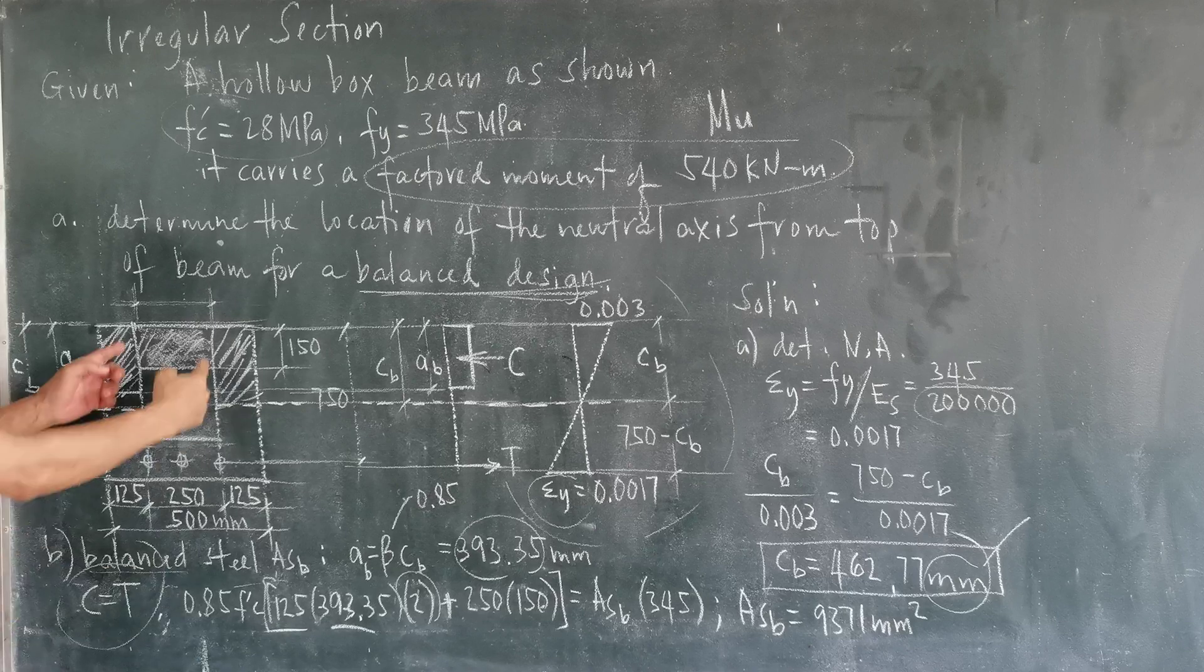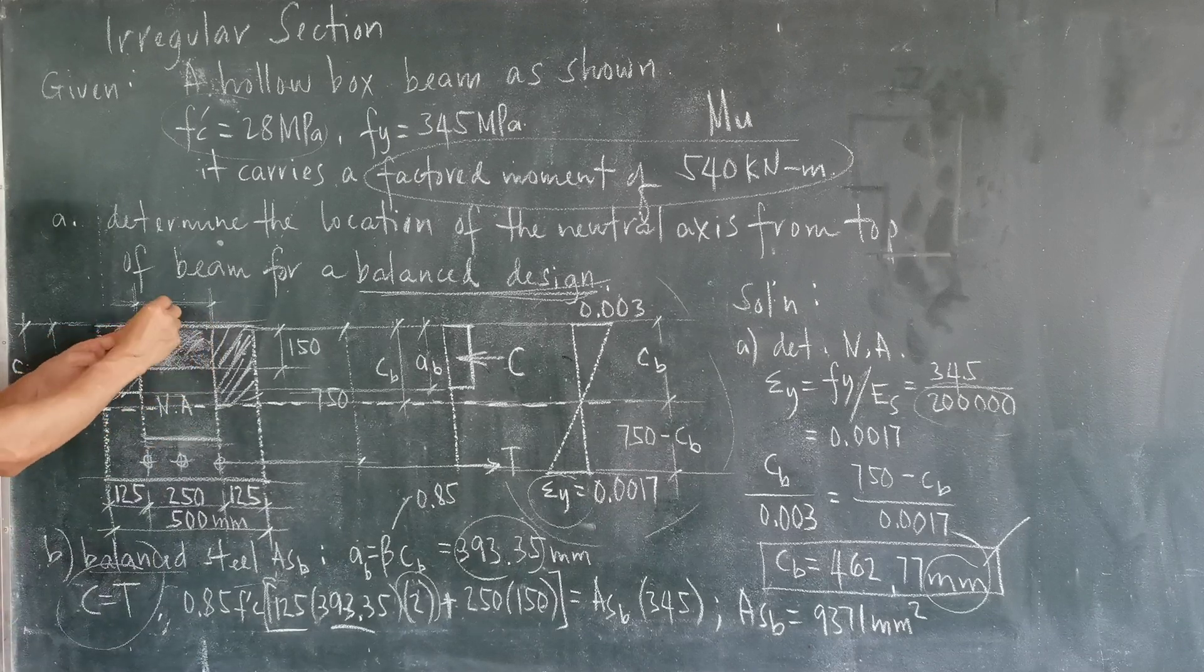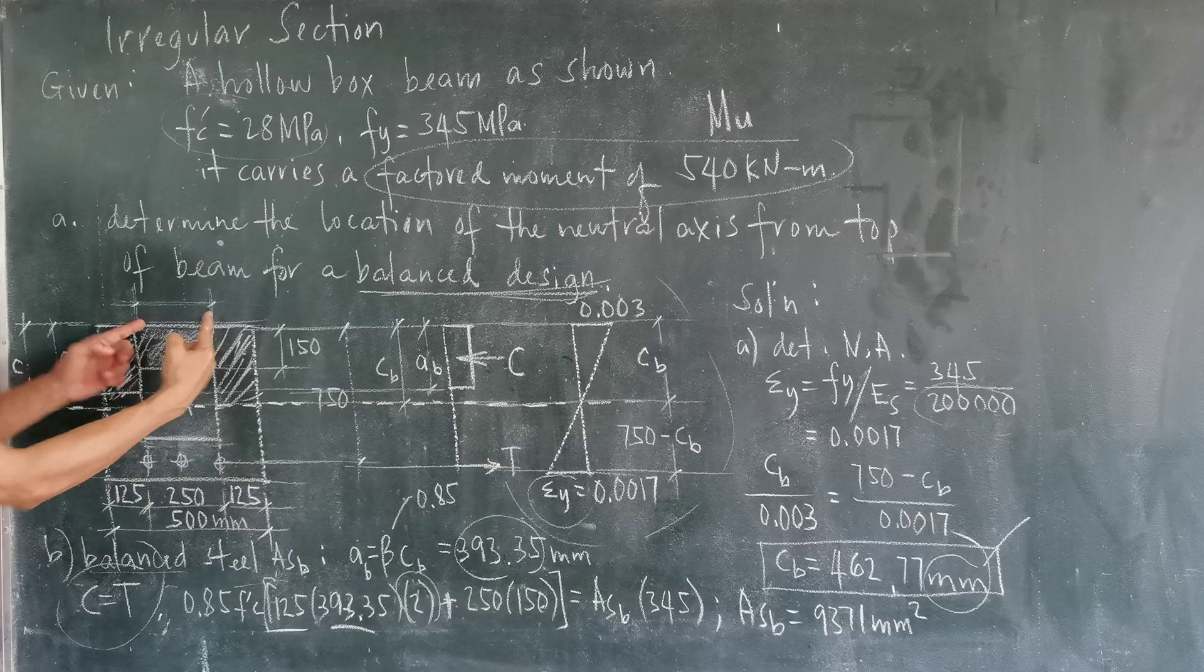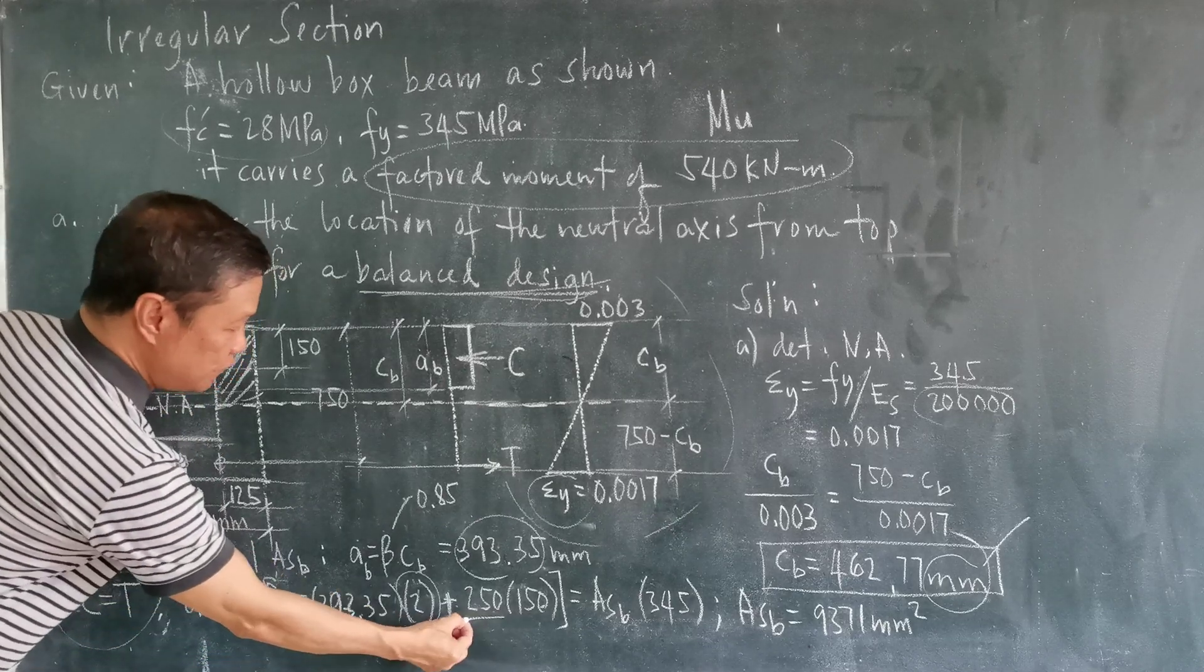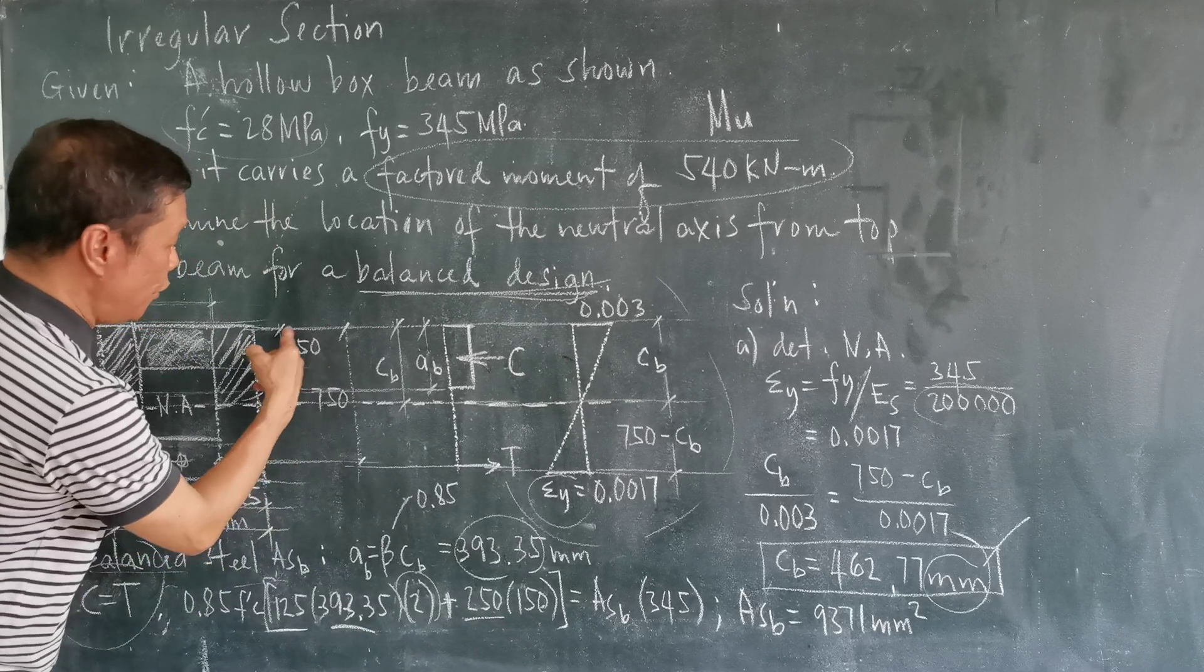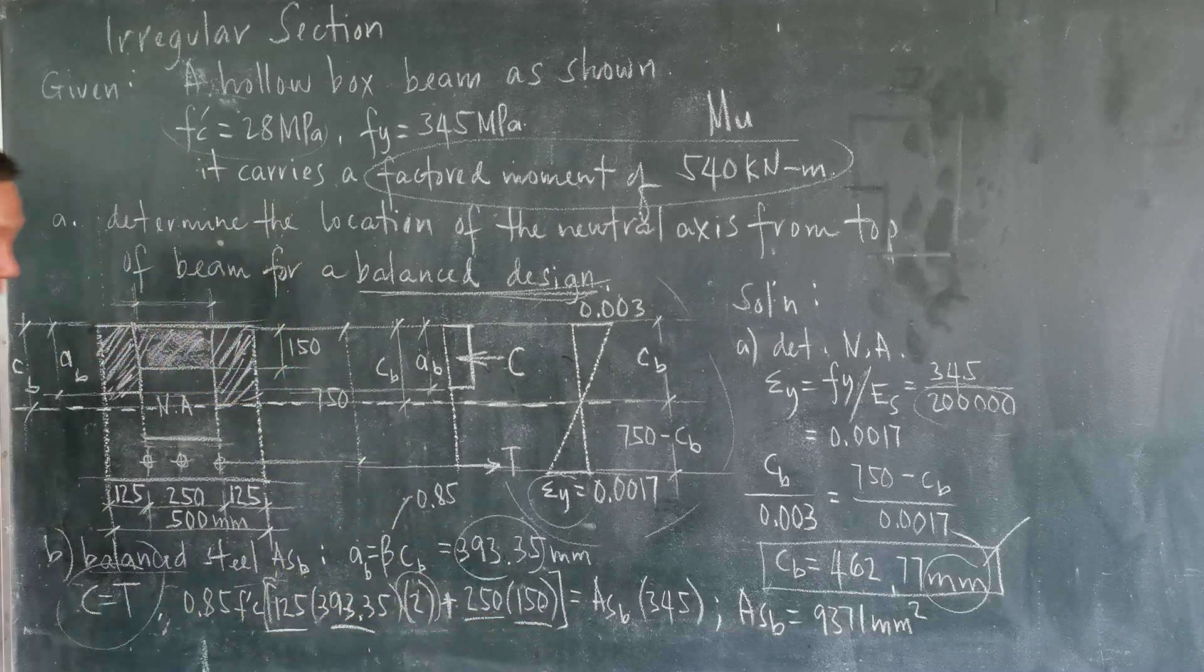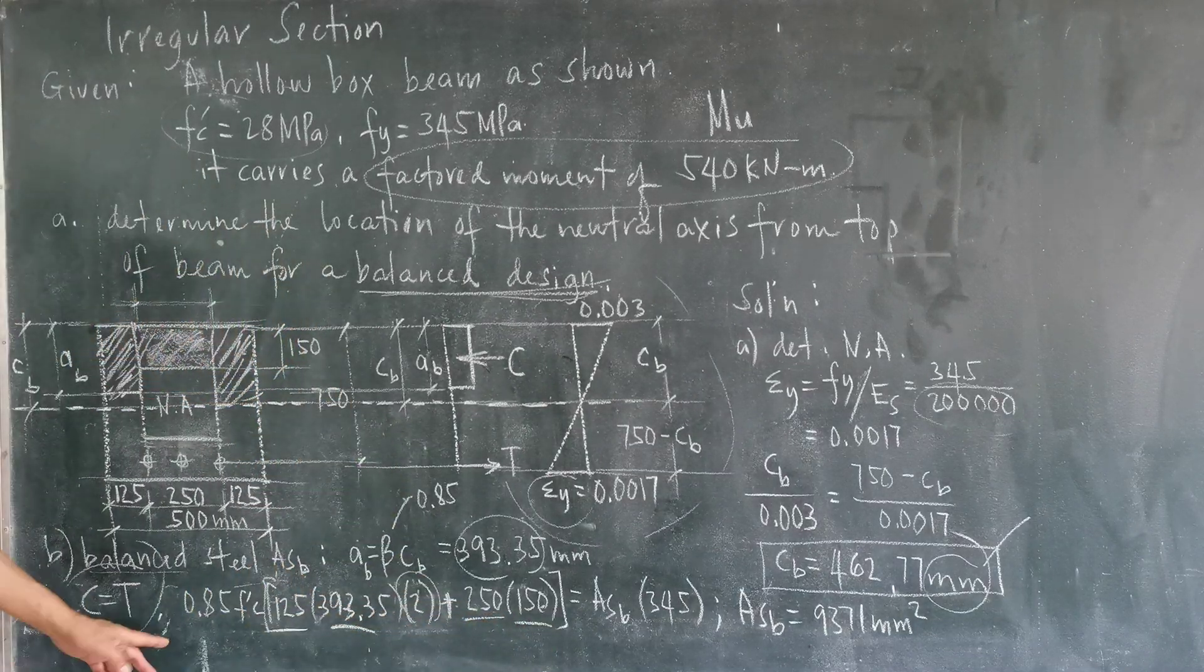Plus 0.85 F prime C times the area in the middle. This area in the middle is equal to 250 times this thickness which is 125. So you can see here, 28 times, I'm sorry, 100.